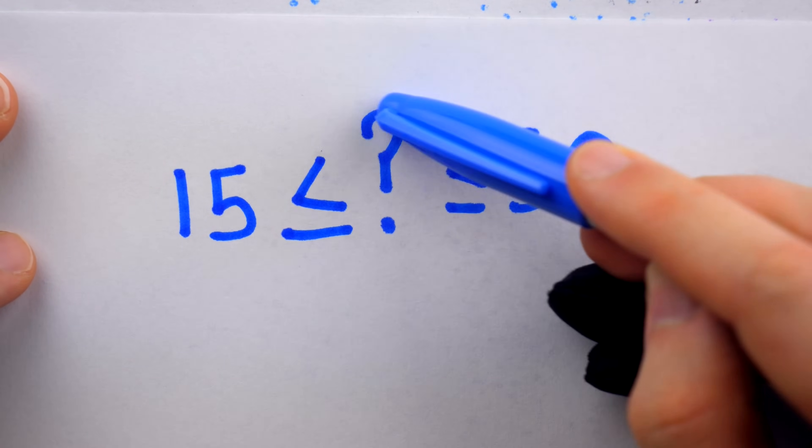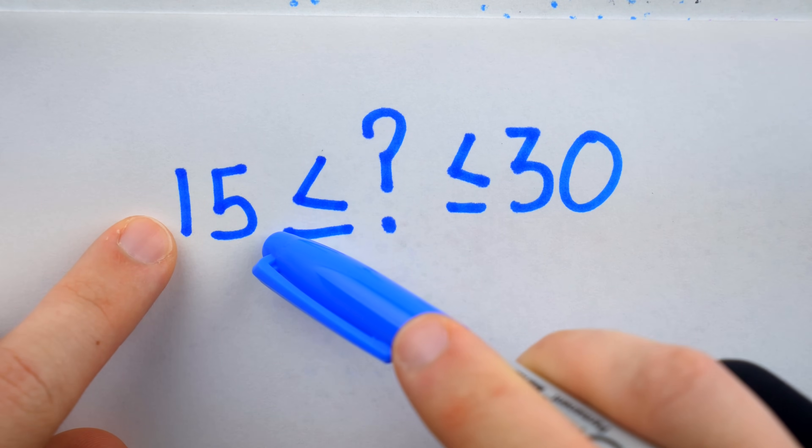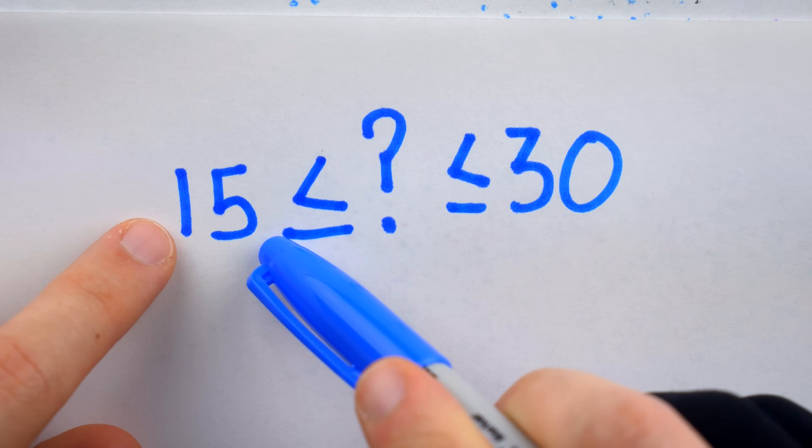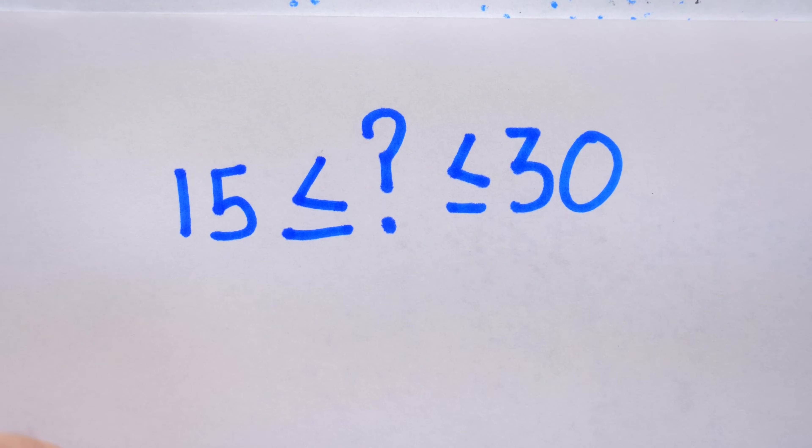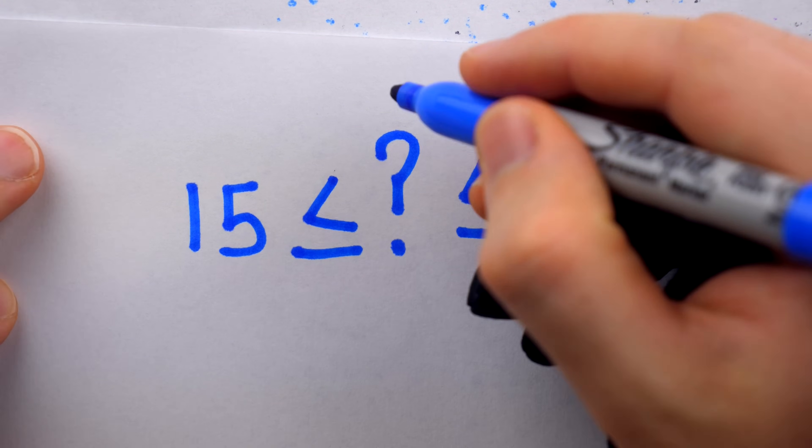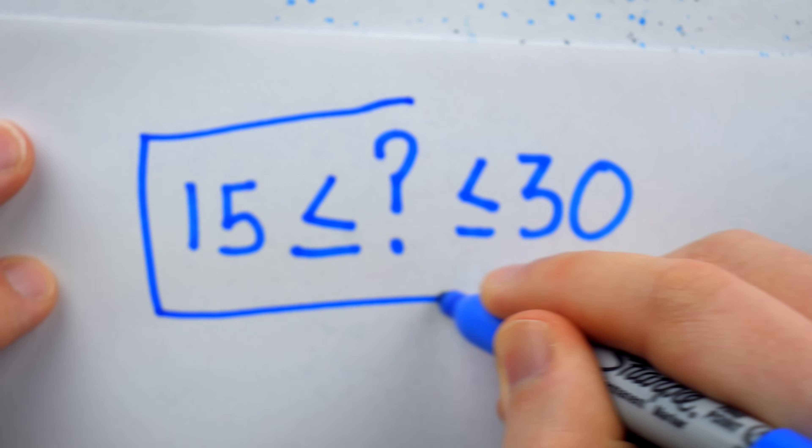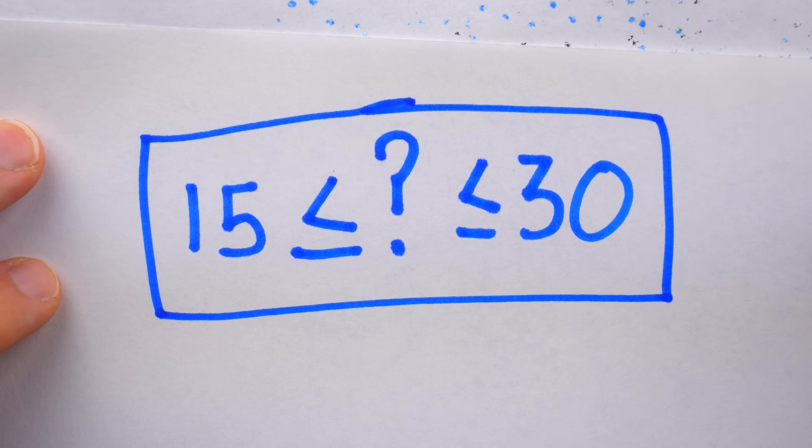Of course, our time we're looking for is going to be bigger than that because we have a cold faucet and a slower hot faucet. So from a couple pieces of simple reasoning, we know that the correct answer is between 15 and 30.